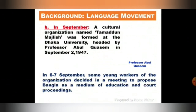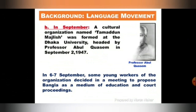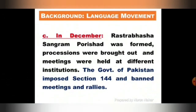In September, a cultural organization named Tamaddun Majlish was formed, headed by Professor Abul Kasem, on 2nd September 1947. In December, Rashtrabhasa Sangram Parishad was formed. Processions were brought out and meetings were held at different institutions.